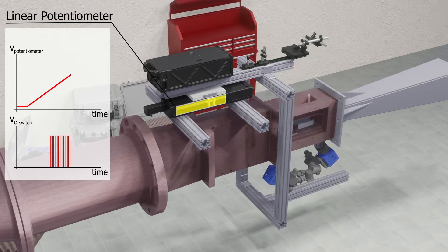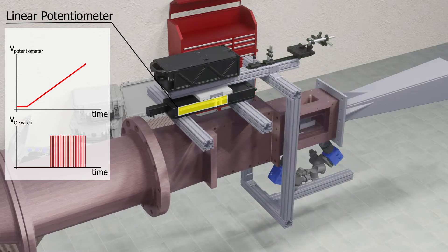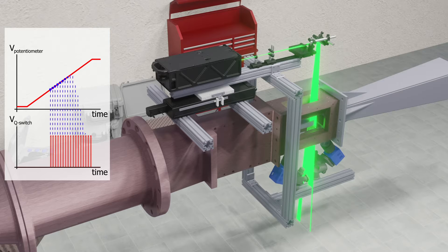Locating the rising edges of the Q-switch in the data series allows us to associate each one of the PIV images to a different physical location.